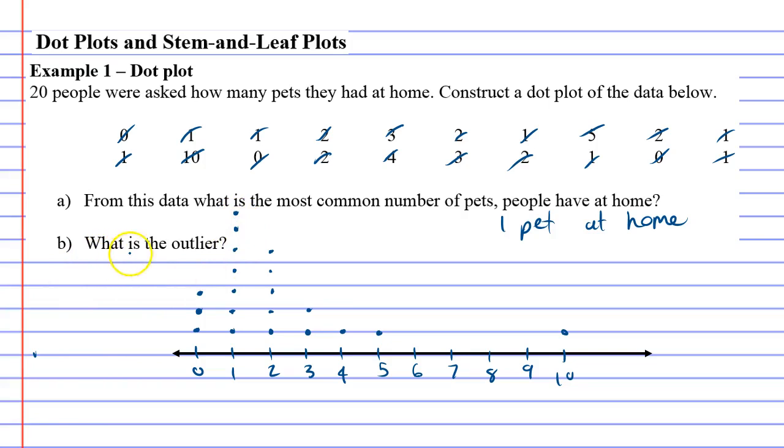Question b: what is the outlier? Looking at the plot, you can see all these dots grouped together, and all of a sudden you've got this 10 way out to the side. So I'd say our outlier is 10.